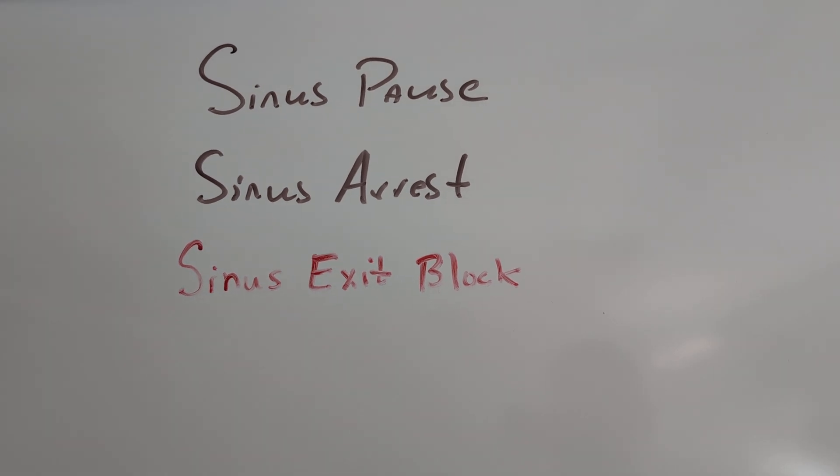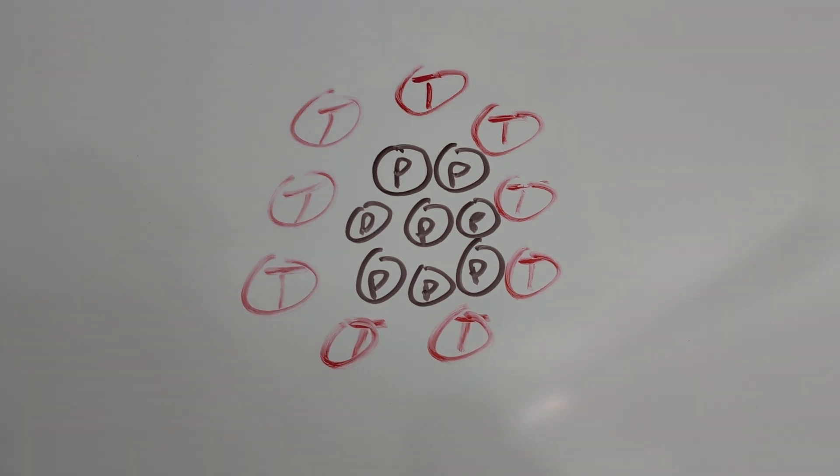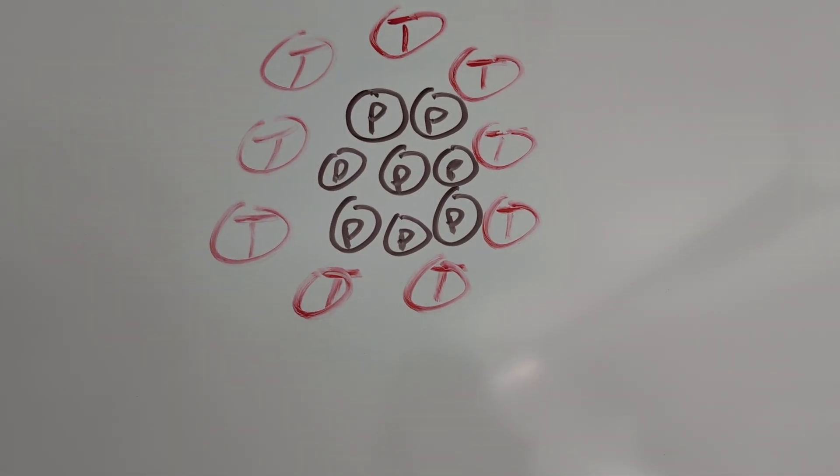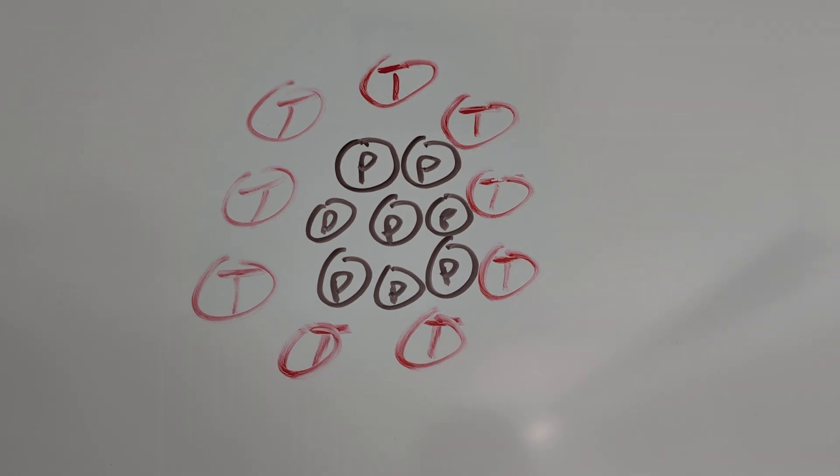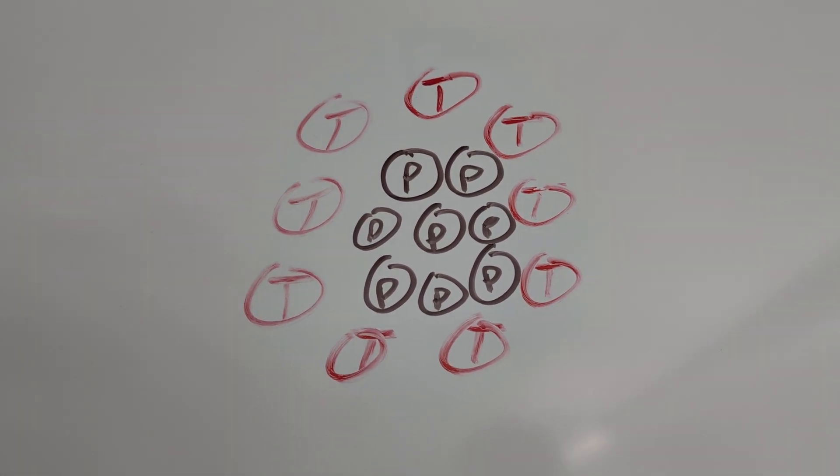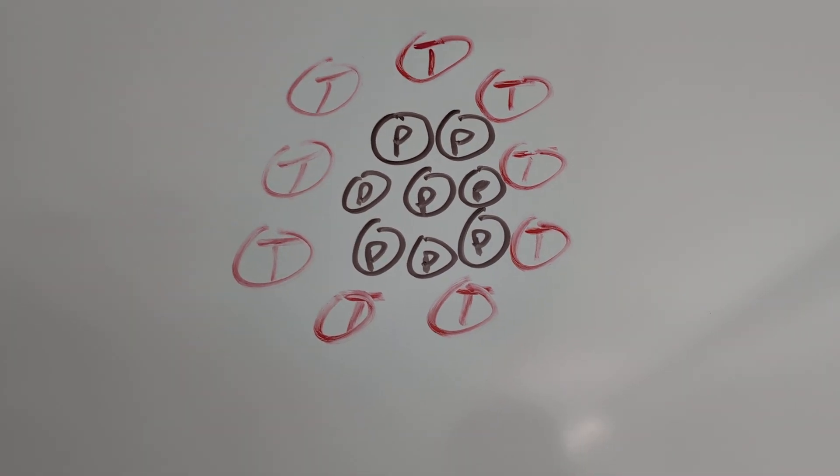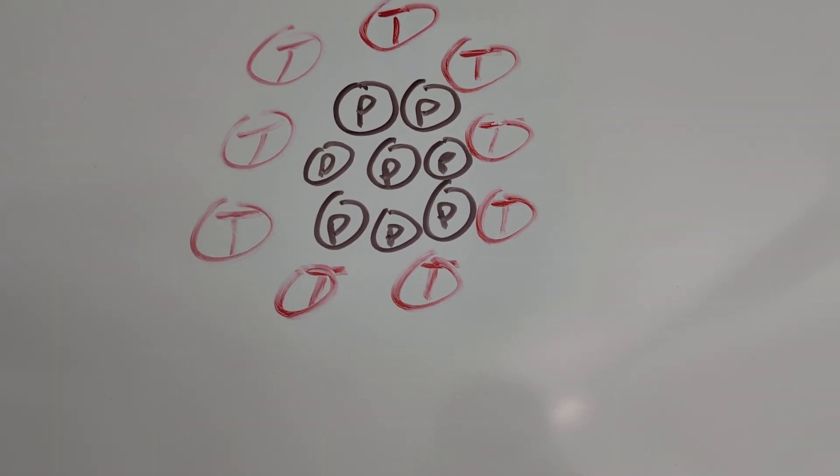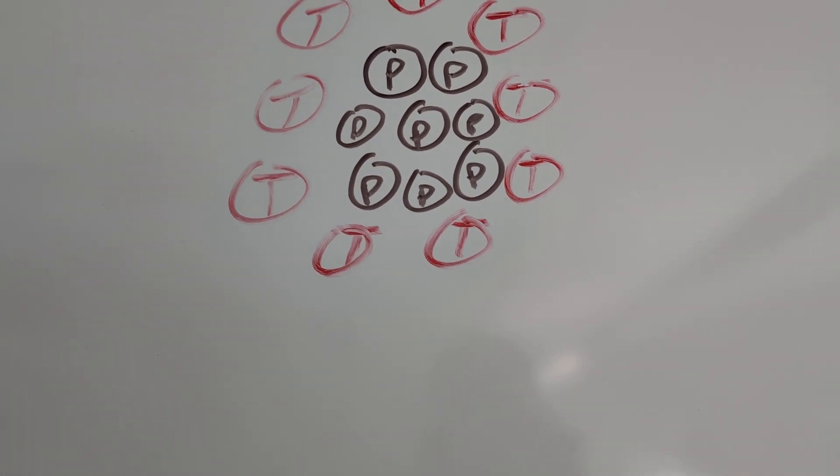So fundamentally the difference comes down to how the SA node, the sinoatrial node, is constructed. The SA node is a little oval area, flat oval area of tissue in the back of the right atrium. It's about 15 millimeters long, about 3 millimeters wide, about a millimeter thick, give or take. And it, roughly speaking, consists of two different cell types.